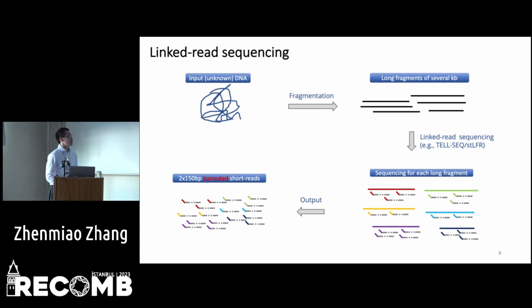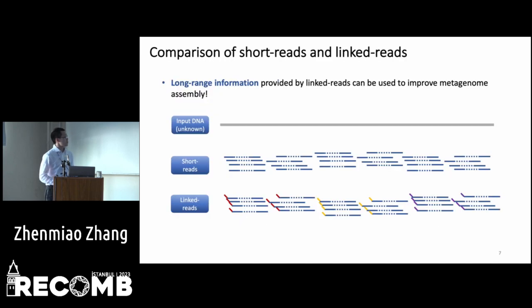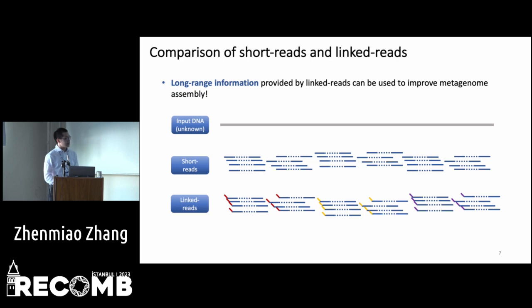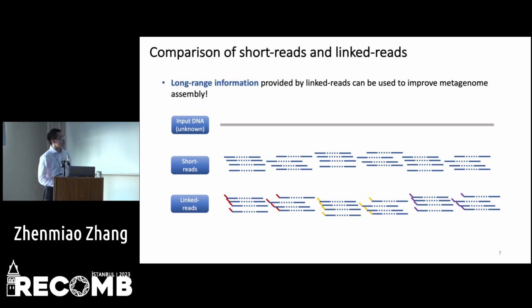The barcode indicates the long-range information of the non-fragments. The only difference between short reads and linked reads is that linked reads have a barcode that contains long-range information, and this information can be used to improve metagenome assembly.